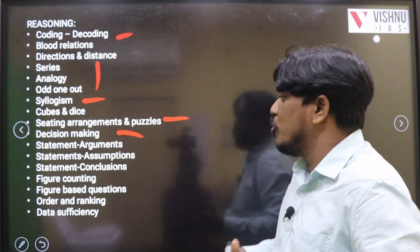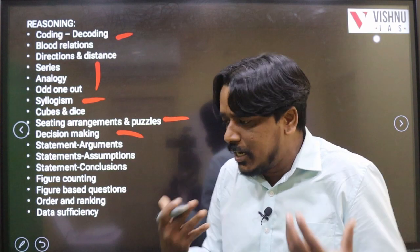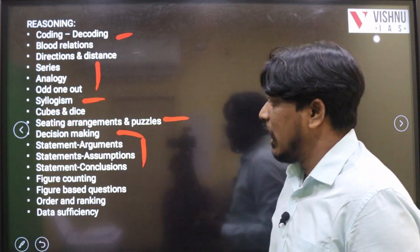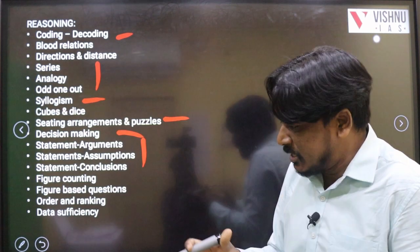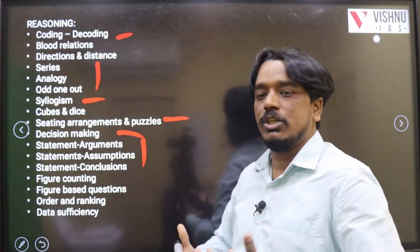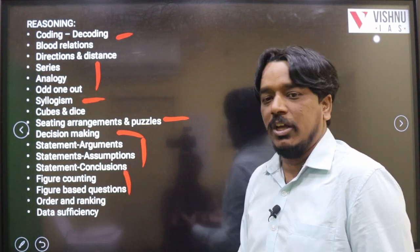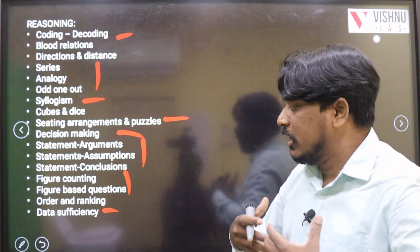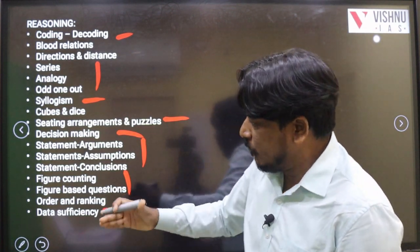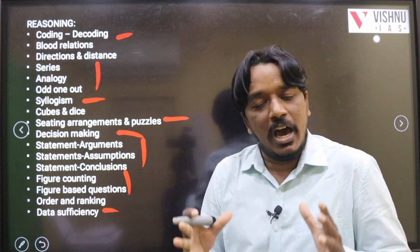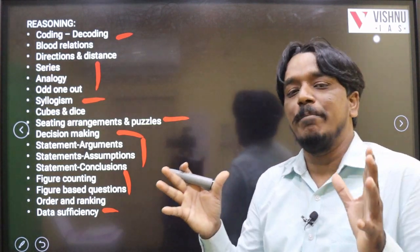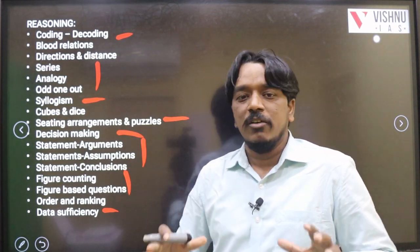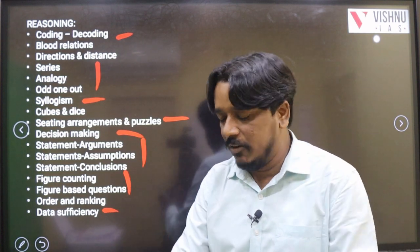Decision making questions are important because once you become an IAS, IPS, or any officer, decision making is important in your job profile. Logical reasoning topics in the notification are obviously important. Figure-related questions — counting figures, mirror image, water image — are also regularly given. In the last two to three years, data sufficiency equations are also given regularly. For books, most students ask about them, but we don't need any special books. Following the logics taught in class is enough to score very good marks.